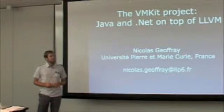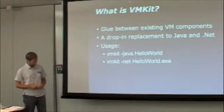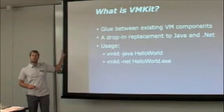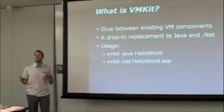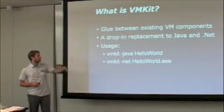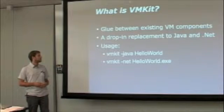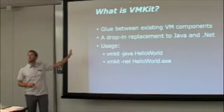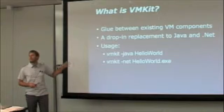VMKit is an implementation of a JVM and a .NET using the LLVM compiler. So what is VMKit? It's a glue between existing virtual machine components. It's a drop-in replacement to Java and .NET, so you can execute your Java applications and your .NET applications using VMKit. Simple how to launch it: VMKit-java hello world, VMKit.net hello world .exe. So if there's one thing you need to remember from this talk, it's this: VMKit — you can run your Java apps, you can run your .NET applications with VMKit.